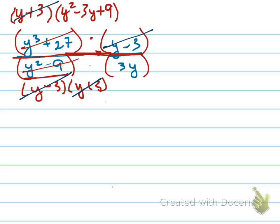And we're going to be left just with y squared minus 3y plus 9 on the top. And 3y on the bottom. Notice that the 3y and the 3y don't cancel because those are not factors of the entire numerator and denominator.